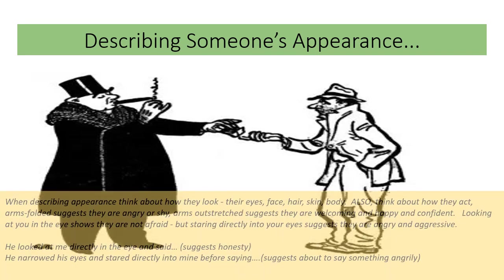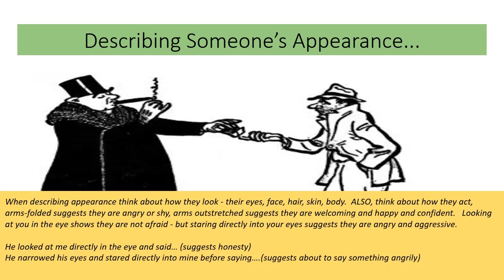When you're describing appearance, think about how they look — their eyes, face, hair, skin, body. Also think about how they act. Arms folded suggest they are angry or shy. Arms outstretched suggest they are welcoming, happy, and confident. Looking at you in the eye shows they are not afraid, but staring directly into your eyes suggests they are angry or aggressive. There's a lot you can tell about describing someone's arms, the way they're standing, the way they get up or sit down, or the way they look.